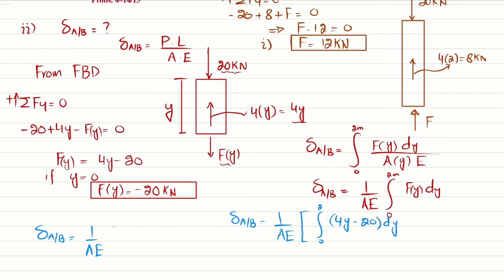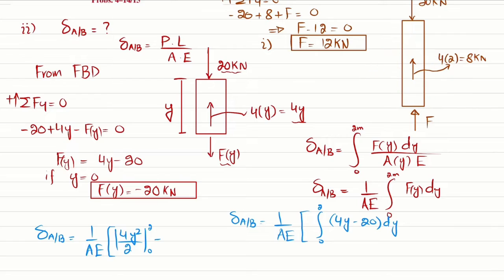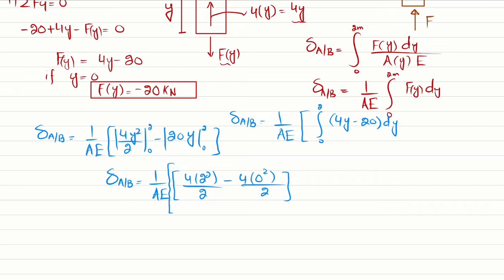Integrating Fy = 4y minus 20 from 0 to 2: the integral of 4y is 4y² over 2, evaluated from 0 to 2; minus 20 times y evaluated from 0 to 2. Substituting y = 2: 4 times 2 squared divided by 2, minus 4 times 0 squared divided by 2, then minus the bracket 20 times 2, minus 20 times 0.